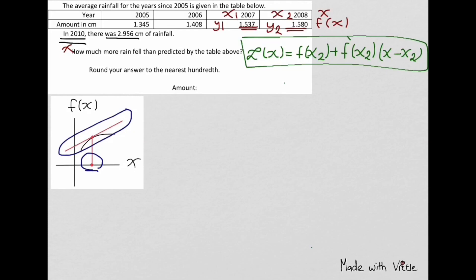To find the derivative of f of x2, we are going to use the two terms which are x1, y1 and x2, y2. The derivative of f of x2, which is the slope, equals y2 minus y1 over x2 minus x1.